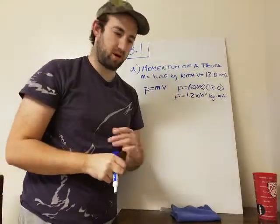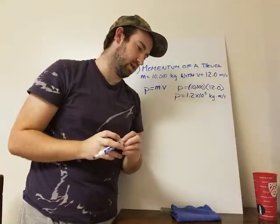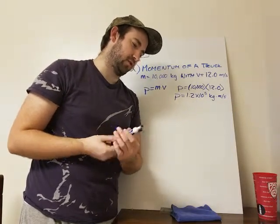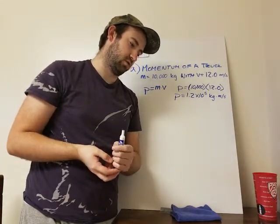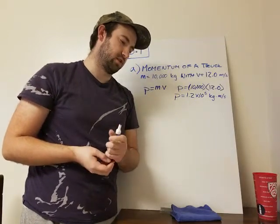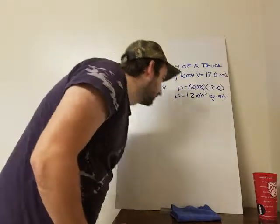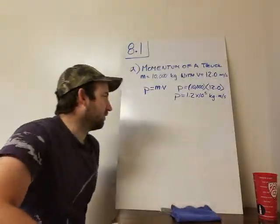Now part B has two parts. It wants to know what speed would a 2,000 kilogram SUV have to attain in order to, one, have the same momentum and two, the same kinetic energy.